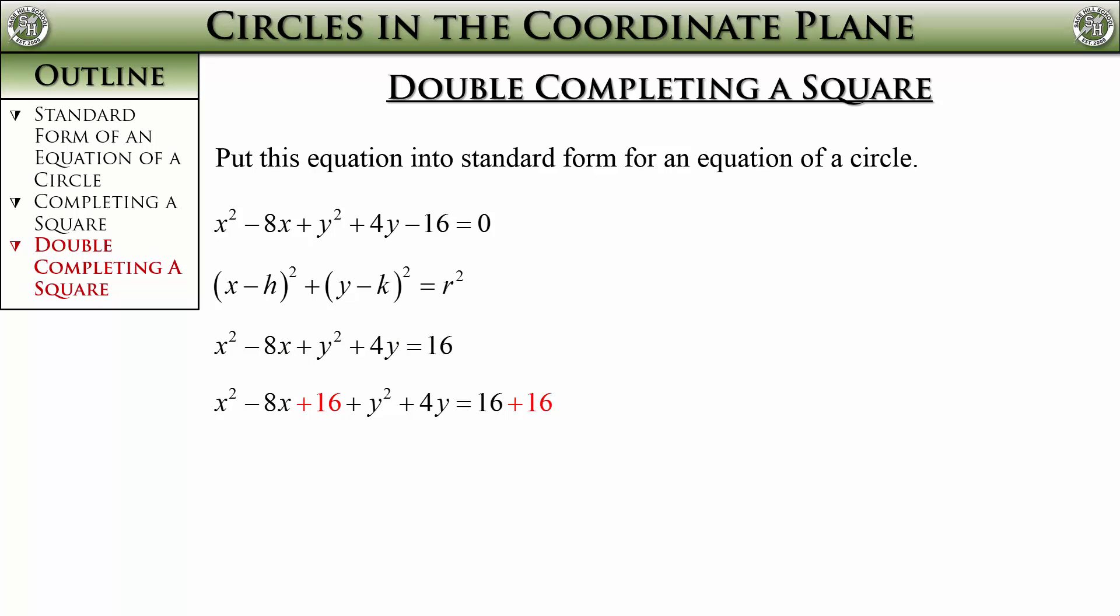Now we need to look at the y. For that, we need to look at the coefficient of the y term. For the y, we need to take half of 4 and then square it. 2 squared is 4, so we add 4 to both sides.